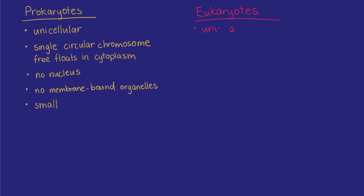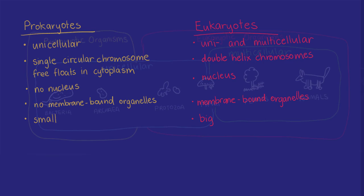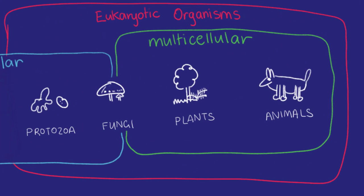In contrast to prokaryotes, eukaryotes have organelles with membranes, DNA in a nucleus and generally have bigger cells to fit all that in. We're going to zoom back in, but on to animal cells now.